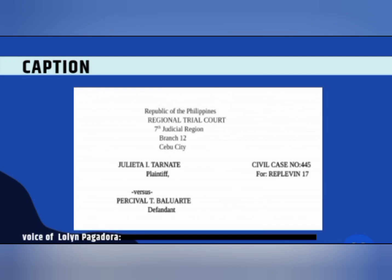Here I will show you an example of the caption of a pleading. The caption sets forth the name of the court, the title of the action, the court docket number if assigned, and the designation of the pleading. The names of the parties are indicated — they shall be named in the original complaint or petition. In subsequent pleadings, it is sufficient to include only the name of the first party on each side with an appropriate indication.